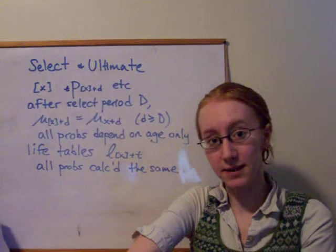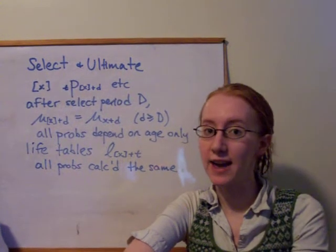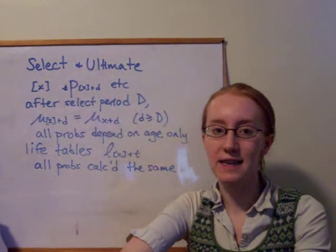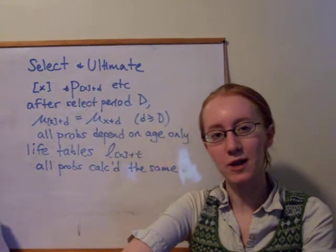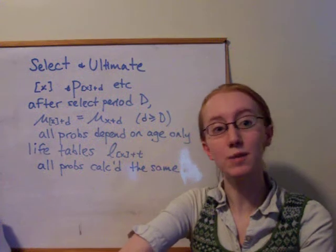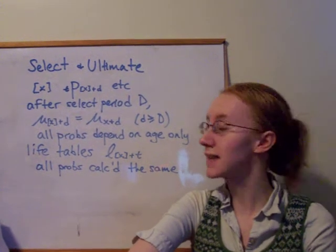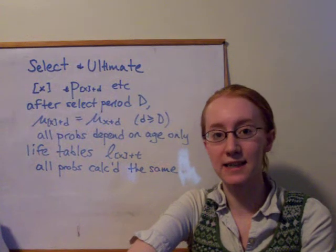means someone who's age x plus d right now, but they were selected d years ago, at age x. And we want them, in this case, to survive t more years. So all of the interpretations of those probabilities are exactly the same, it's just that we're getting two pieces of information about their age. We know their age right now, that'd be x plus d, and we know the age at which they were selected.